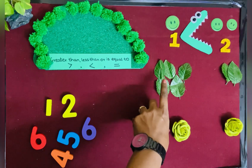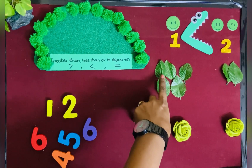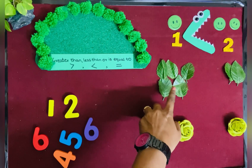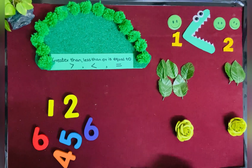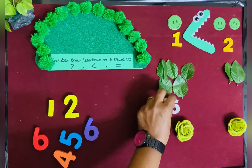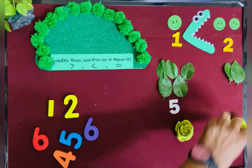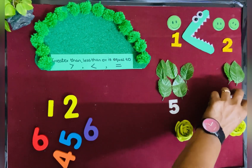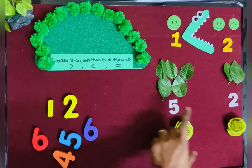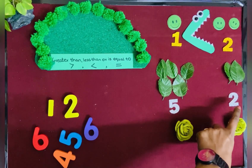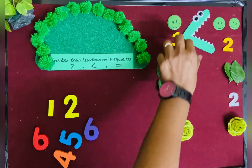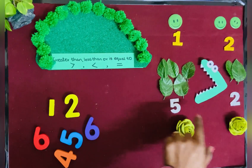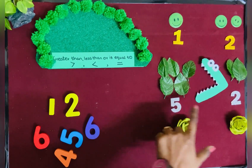How many leaves are here? 1, 2, 3, 4, 5. On the other side, 1, 2. So, the crocodile likes 5 or 2? Yes, 5. Because 5 is greater than 2.